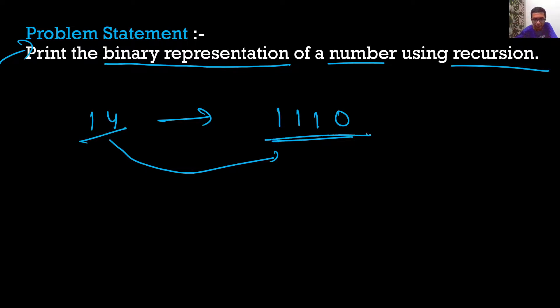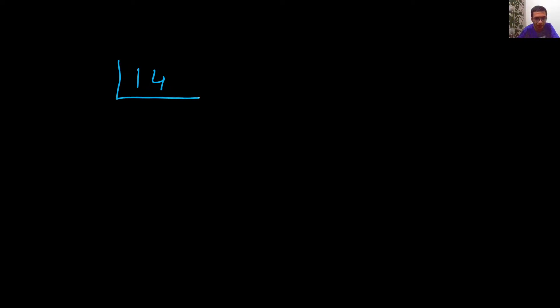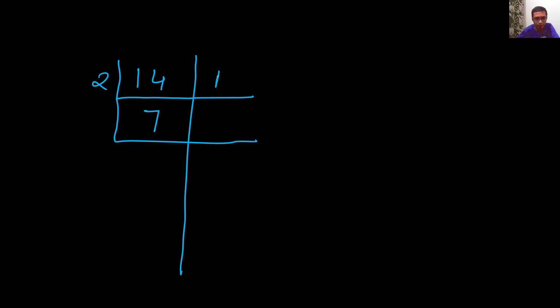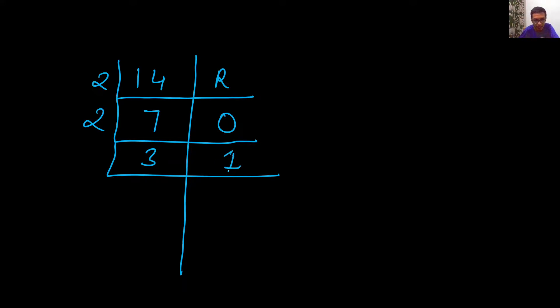Let's move on to the approach. We have 14, and we need to convert it to binary. I'll divide 14 by 2 — 2 times 7 is 14, so the remainder is 0. Now I'll divide 7 by 2 — 2 times 3 is 6, which is 1 less than 7, so the remainder is 1. Then I'll divide 3 by 2 — 2 times 1 is 2, which is 1 less than 3, so again the remainder is 1.